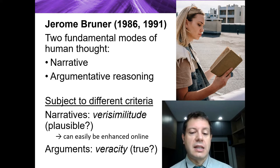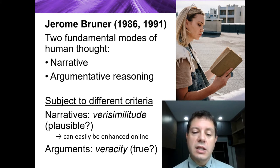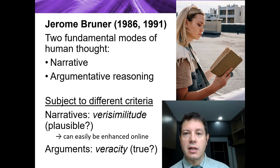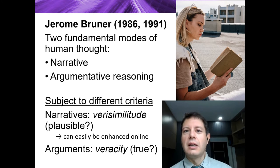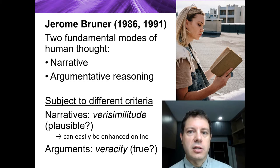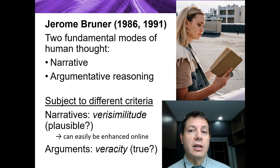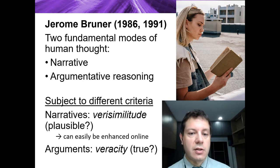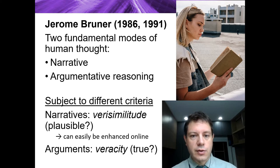For argumentative reasoning, Brunner argues the primary criterion is veracity — truth value. However, this could be questioned, as there are certainly many cognitive biases and other factors that come into even argumentative reasoning.